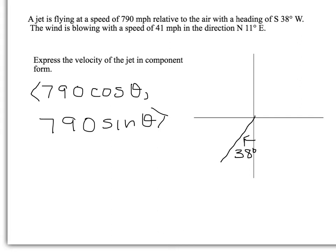But theta always starts from our positive x-axis and goes counterclockwise, so this would be 270 degrees minus 38 degrees. 270 degrees would be due south and we are 38 degrees west of that. So our theta is 232 degrees.